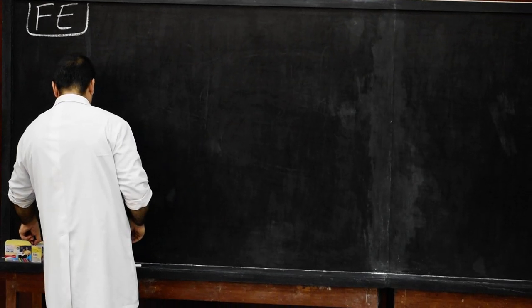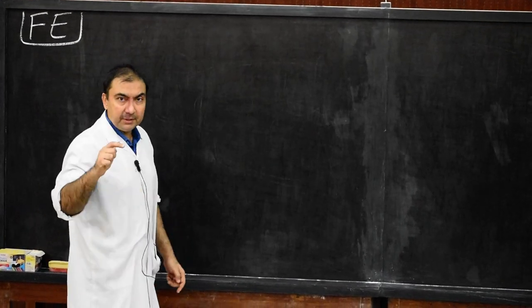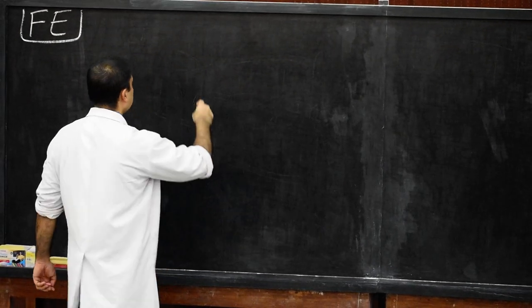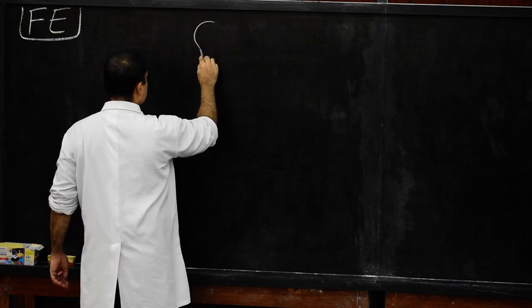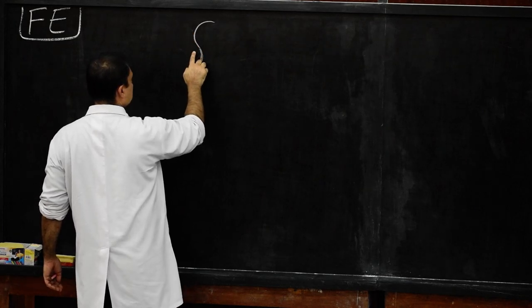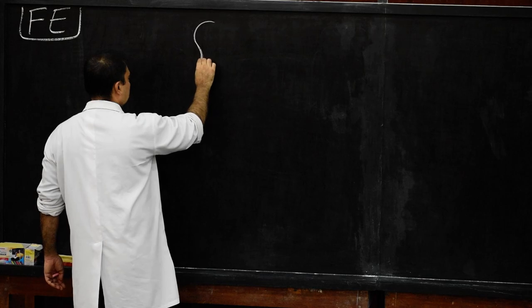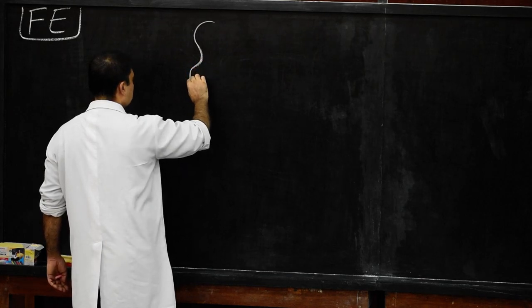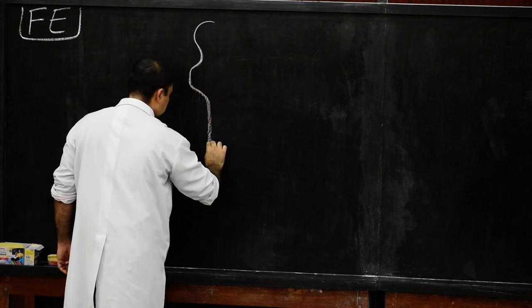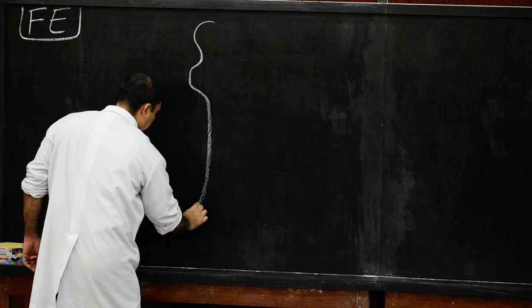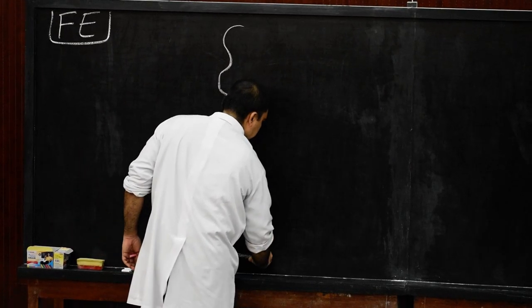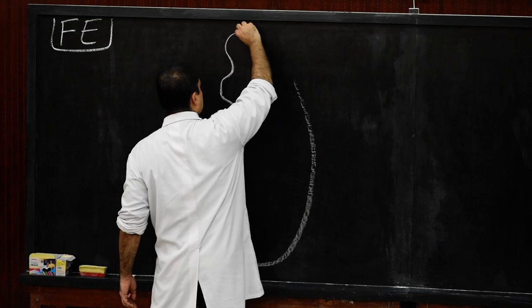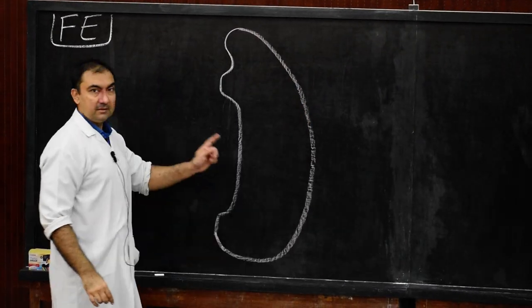Let us draw the first diagram: a sagittal section of the embryo before the folding. Here we draw the amniotic cavity on the right side, on the left side the yolk sac. The curves include: first, septum transversum; next, space for pericardial sac; then buccopharyngeal membrane; then space for the entire neural tube till the primitive streak; then cloacal membrane. After the cloacal membrane, carve this dorsally to complete the amniotic cavity.